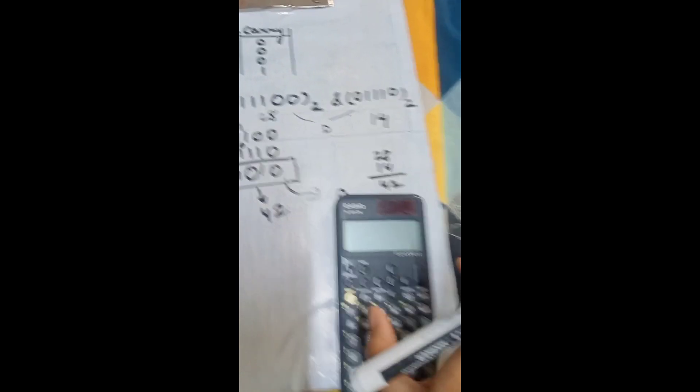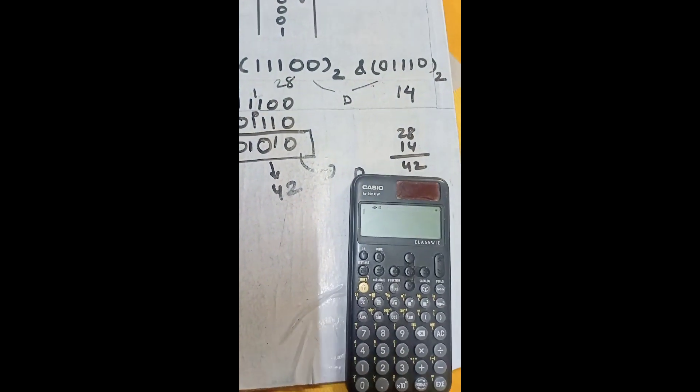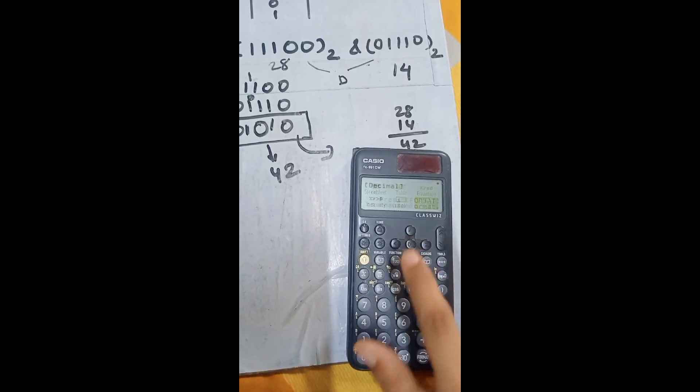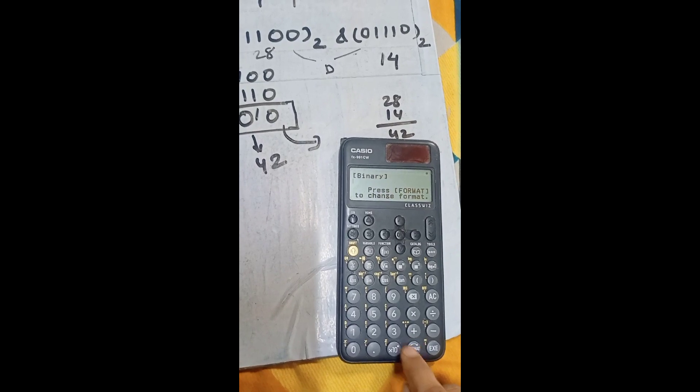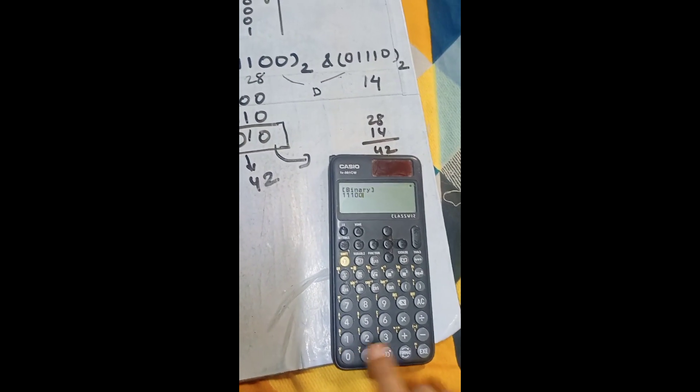I will show you it is correct or not. So, for this, change first format. Write the number, triple 1, double 0.